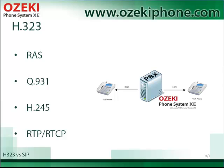Endpoints use the RAS protocol to communicate with the gatekeeper. RAS is used to enable or disable a call. The Q.931 protocol is responsible for setting up and terminating a session between participants. H.245 is used to control the multimedia communication. The two endpoints need to use the same processing methods and H.245 is responsible for this.